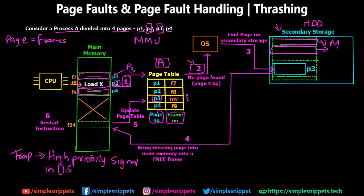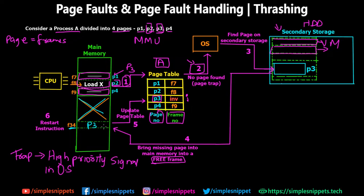Step four is to bring back the missing page into main memory into a free frame. The operating system checks whether there is a free frame in the main memory. P3 is going to be loaded into frame F34 because F34 is free — you can see the cross marks indicating occupied frames, and frame number 34 is free. Since the frame size and page size are the same, P3 is directly loaded into frame F34.